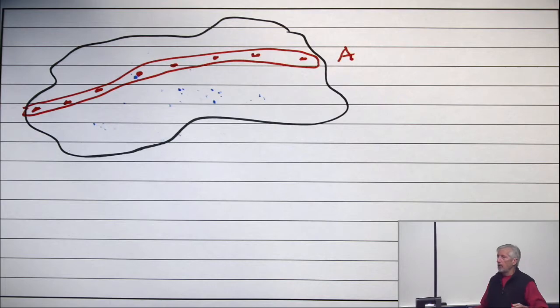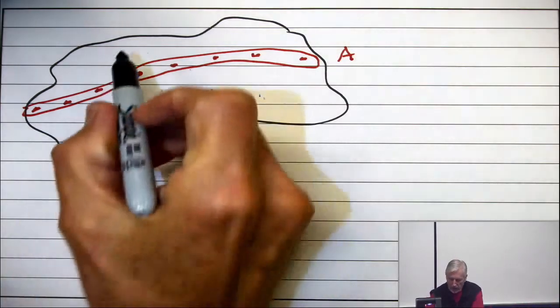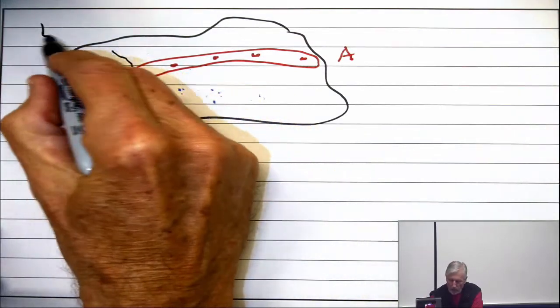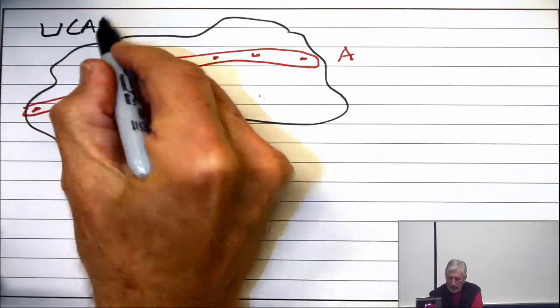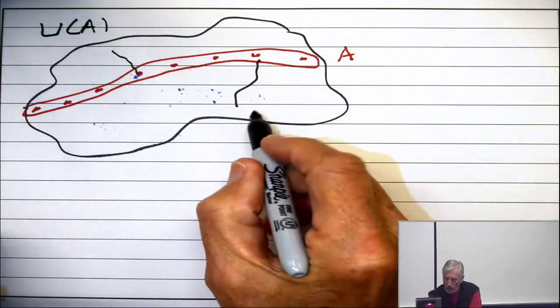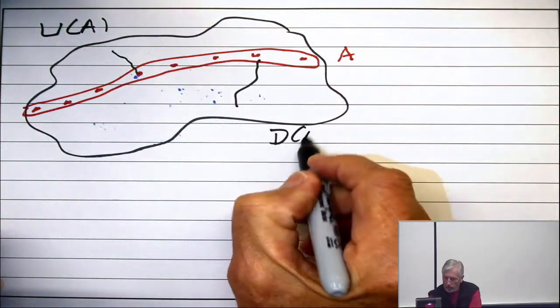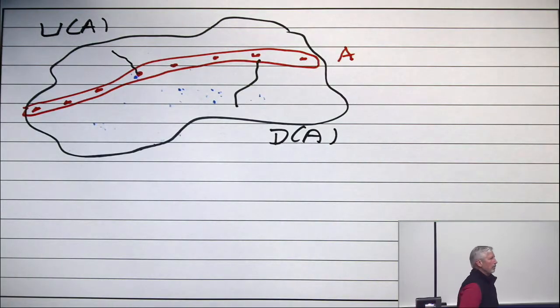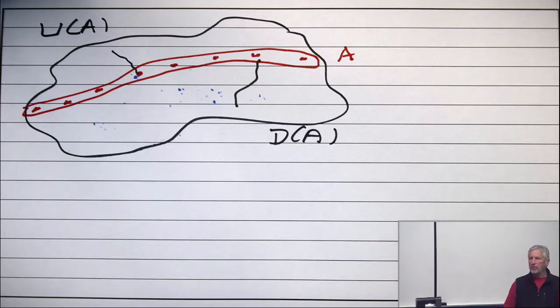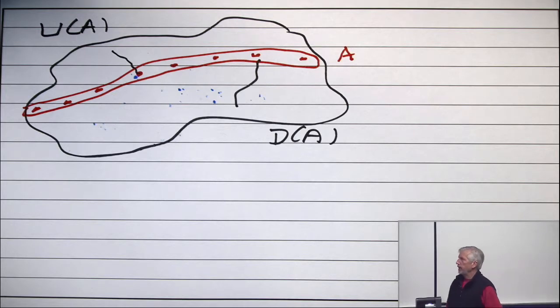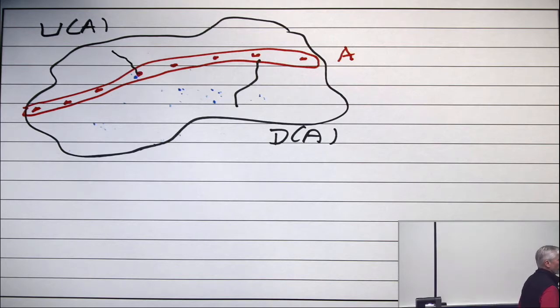So, if you look at any element not in the maximal anti-chain, it's either over something, and these are the up points, up from A, or it's down from A, it's under something. These are the points in down from A. Any time you take a maximal anti-chain, there's a natural partition of the poset into the anti-chain, and the points which are up from the anti-chain, and the points which are down from the anti-chain.